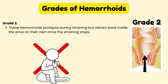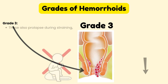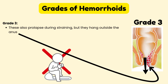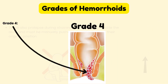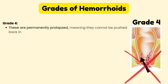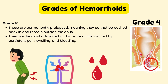Grade 3 hemorrhoids also prolapse during straining, but they hang outside the anus and must be manually pushed back in to return to their original position. Grade 4 hemorrhoids are permanently prolapsed, meaning they cannot be pushed back in and remain outside the anus. They are the most advanced and may be accompanied by persistent pain, swelling, and bleeding.